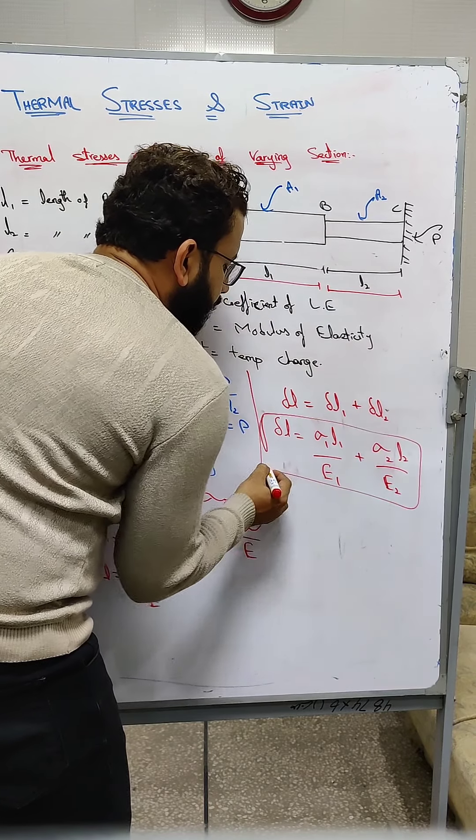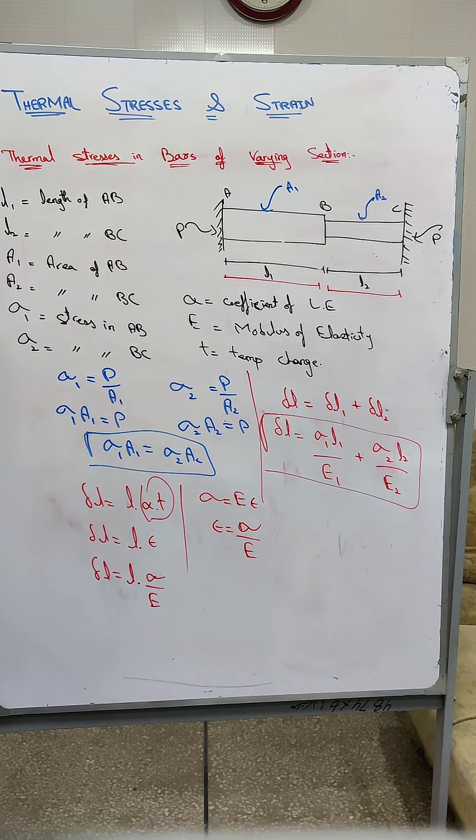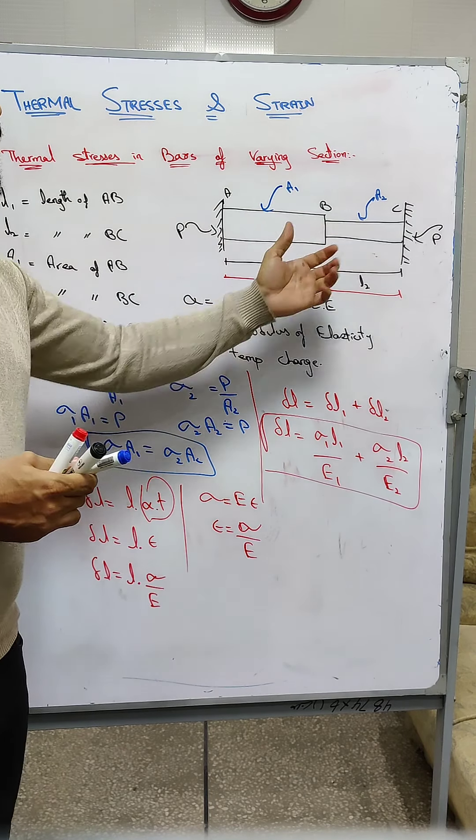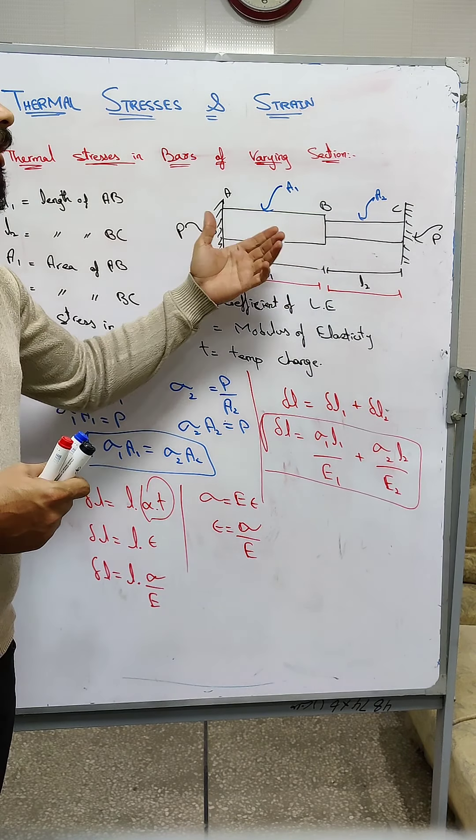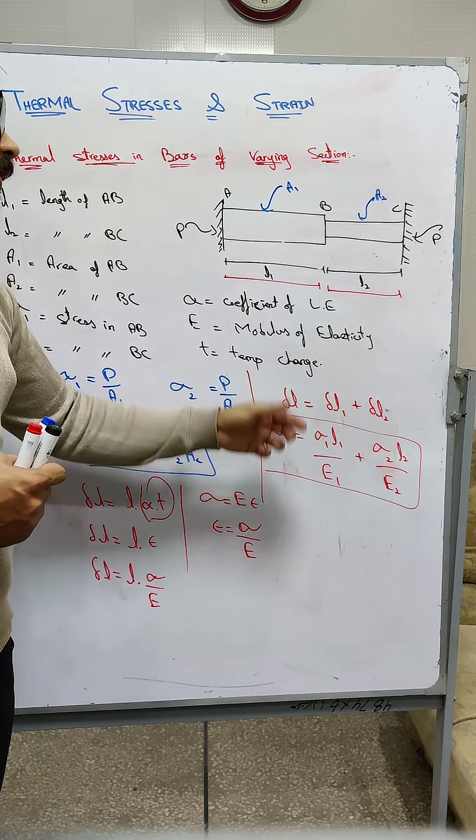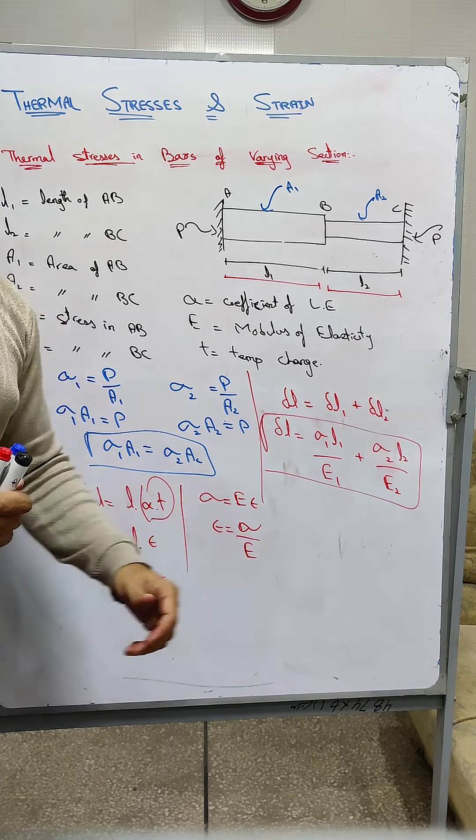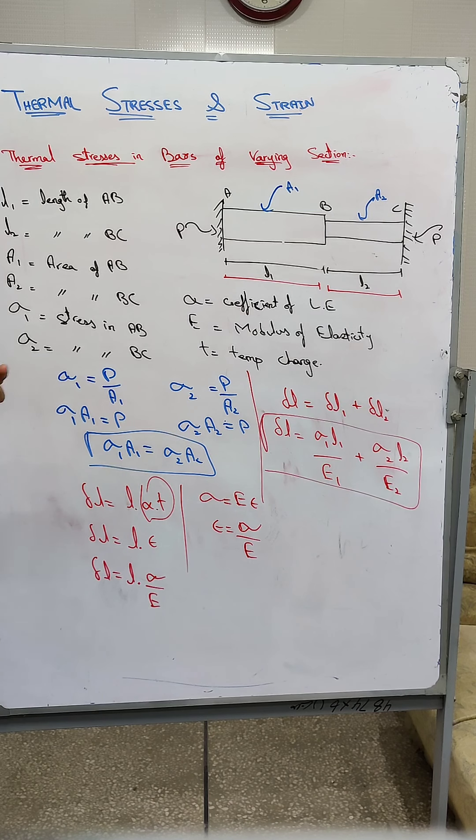Delta L is sigma 1 L1 over E1 plus sigma 2 L2 over E2. Now we have E1 and E2, which we left separate. Because if there are two different materials, the cross-section changes and if the materials are different, then the modulus of elasticity E is different.